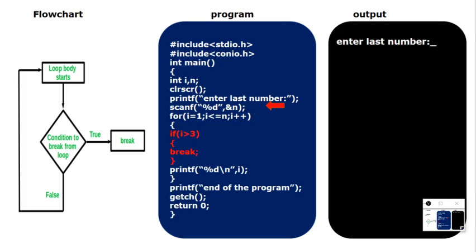Let's go to the program so you can understand in depth what is happening with break. On the left side you can see a flowchart, on the right side we have the output, and in the middle we have the program. The condition is: if the value of i increases greater than 3, the loop should stop. Once the condition is satisfied, it will go to the break and the loop stops. Until the condition is false, the loop continues.